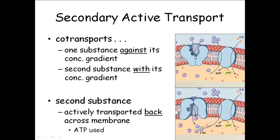It's called secondary active transport because the function of this co-transporter protein is dependent on the sodium-potassium pump. The sodium-potassium pump sets that concentration gradient up so that sodium wants to come back in. It's almost like sodium was a waterfall and this was a canoe going over the waterfall — the water's carrying you along, you're not having to do anything. So in that sense, that part's passive. Sodium wants to come back into the cell, but this is considered active transport because if you didn't have the pump to pump the sodium out to begin with, you couldn't get the glucose in.